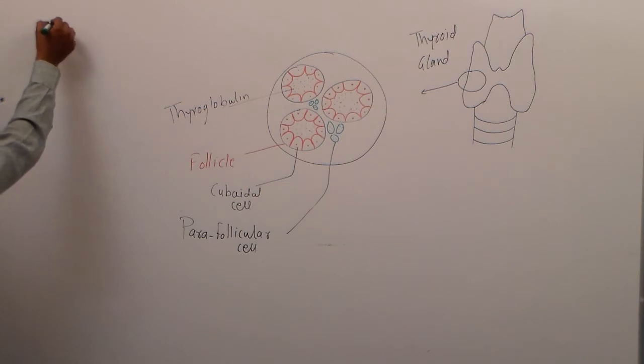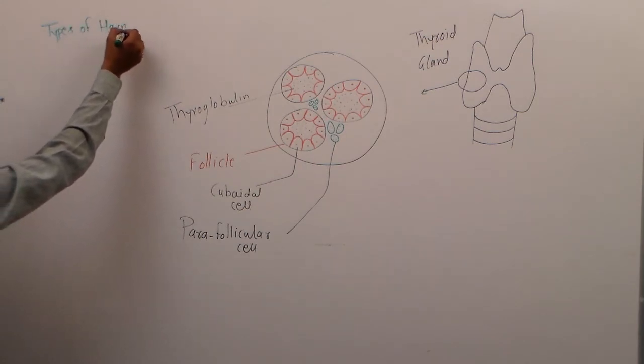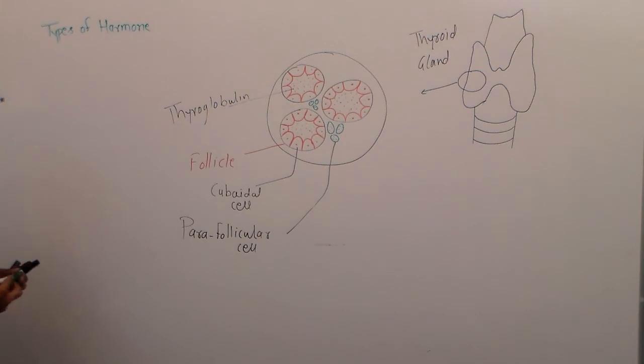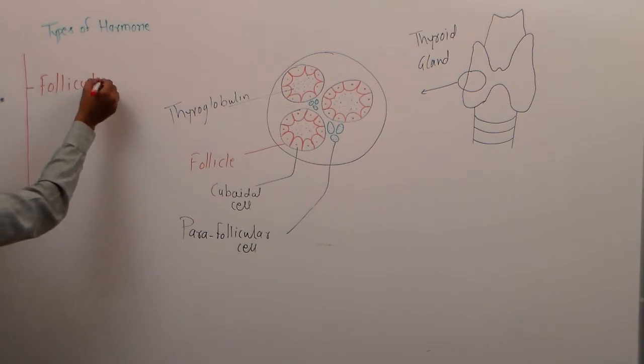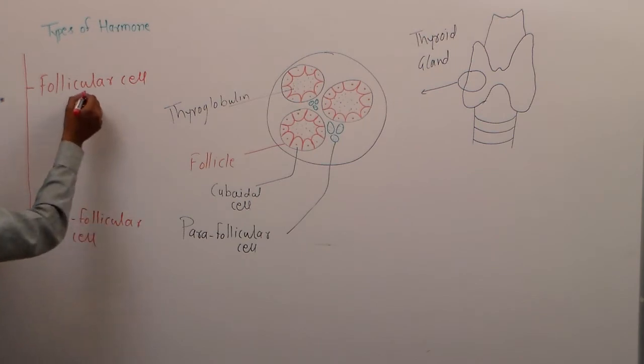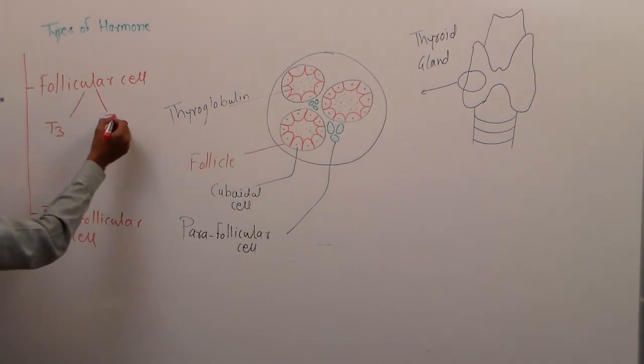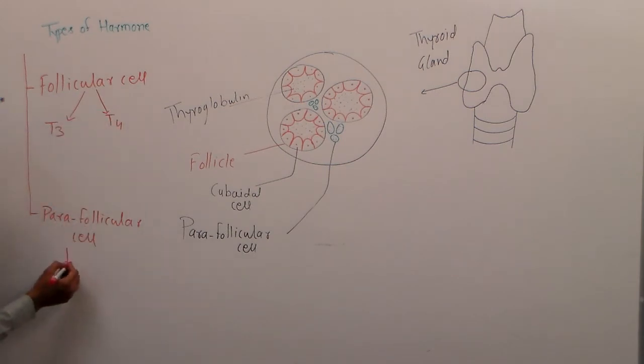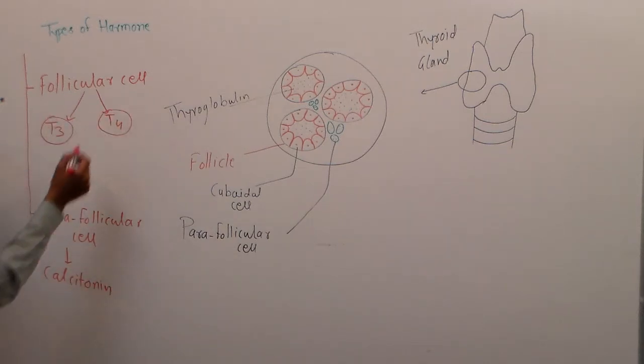So our next heading is types of hormone. From the thyroid gland, two cells here: follicular cells. Follicular cells secrete T3 and T4, parafollicular secrete calcitonin. These are the three hormones which are secreted from the thyroid gland.